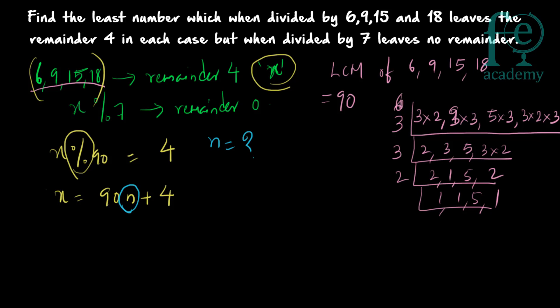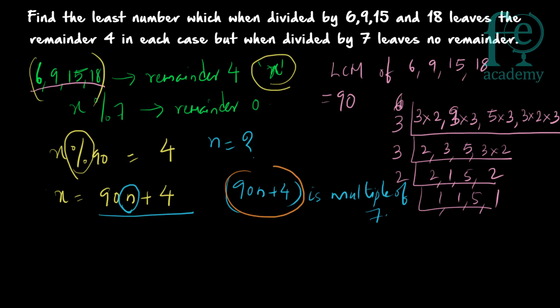We know x = 90n + 4. The clue for finding n is that when x is divided by 7, it leaves no remainder. So 90n + 4 must be a multiple of 7. The next step is to split 90n + 4 in such a way that it becomes a sum of multiples of 7.